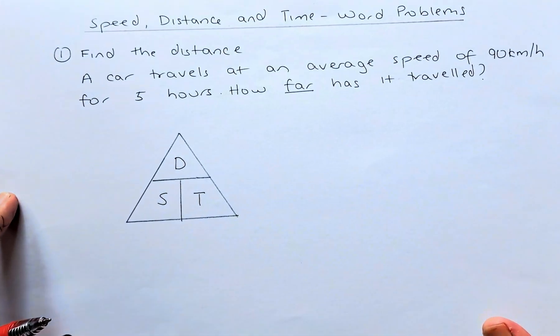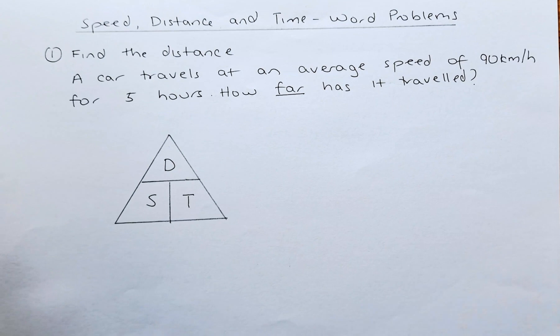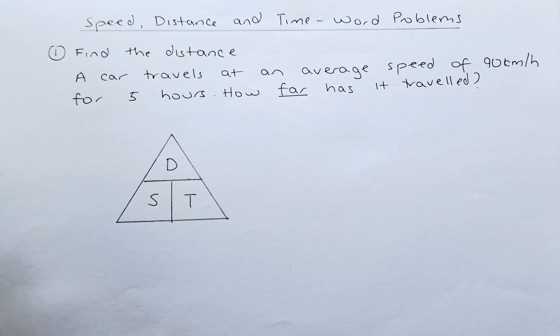Now we have example one. We are going to find the distance. A car travels at an average speed of 90 km per hour for 5 hours. How far has it traveled? The word far means the distance, so we are going to calculate distance.